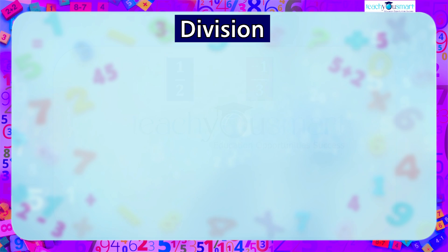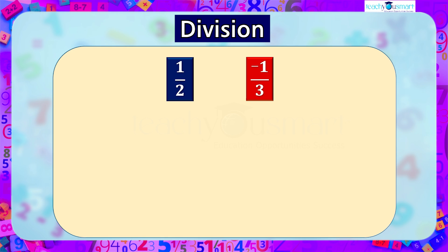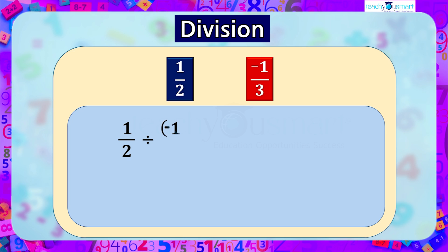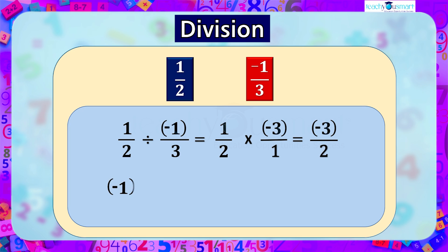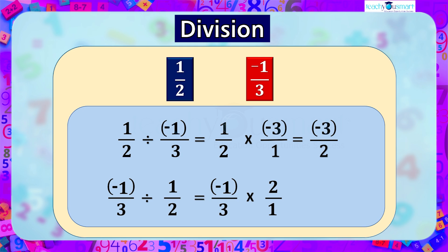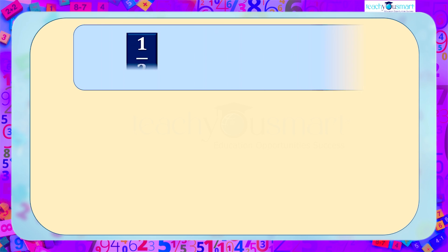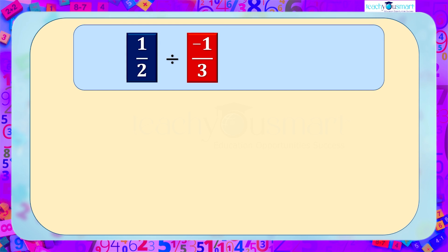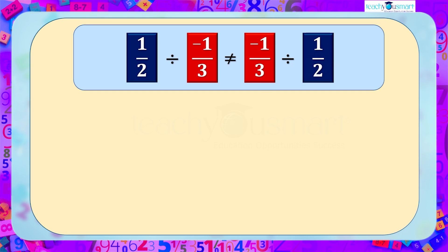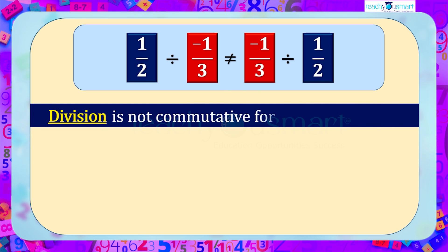Lastly let's look at division of rational numbers. Dividing one by two by minus one by three: one by two divided by minus one by three equals one by two multiplied by the reciprocal of minus one by three, that is minus three by one, which equals minus three by two. And minus one by three divided by one by two equals minus one by three multiplied by the reciprocal of one by two, that is two by one, which equals minus two by three. Since minus three by two is not equal to minus two by three, division is not commutative for rational numbers.